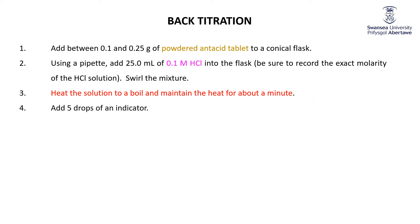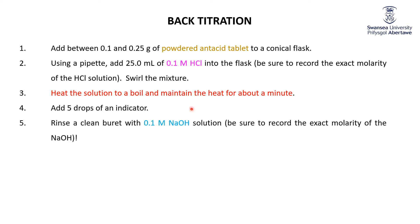Add five drops of an indicator. I'm going to show you two experiments: one using universal indicator to show something about the experiment, and another using phenolphthalein, which is the normal indicator to use. We then rinse a clean burette with 0.1 molar sodium hydroxide solution. We need to know exactly how many moles of NaOH we have, so do record the exact molarity — it'll be about 0.1 molar NaOH.